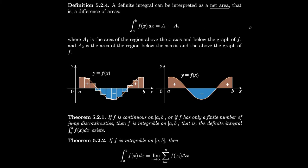We can interpret a definite integral as a net area — a difference of areas — where the integral from a to b of f dx is area 1 minus area 2. Area 1 is the region above the x-axis and below the graph, and area 2 is the region below the x-axis and above the graph of f. If you take all of the area 1 pieces and subtract the area 2 pieces, you get a net area or a signed area. This is what it looks like for our Riemann sum, and then taking the limit gives you the integral.